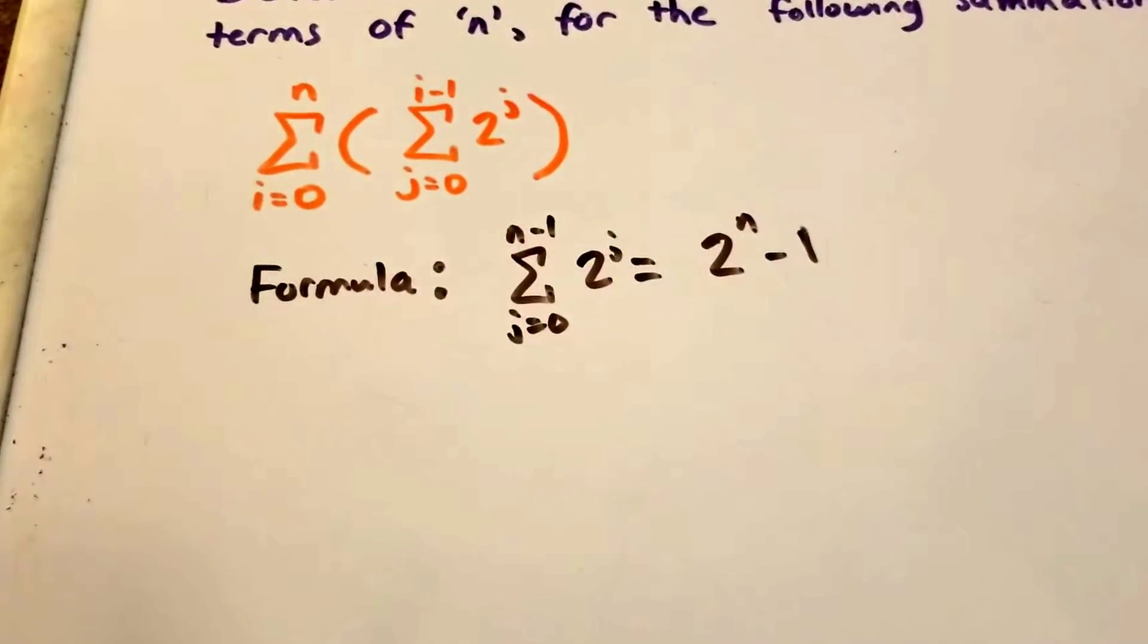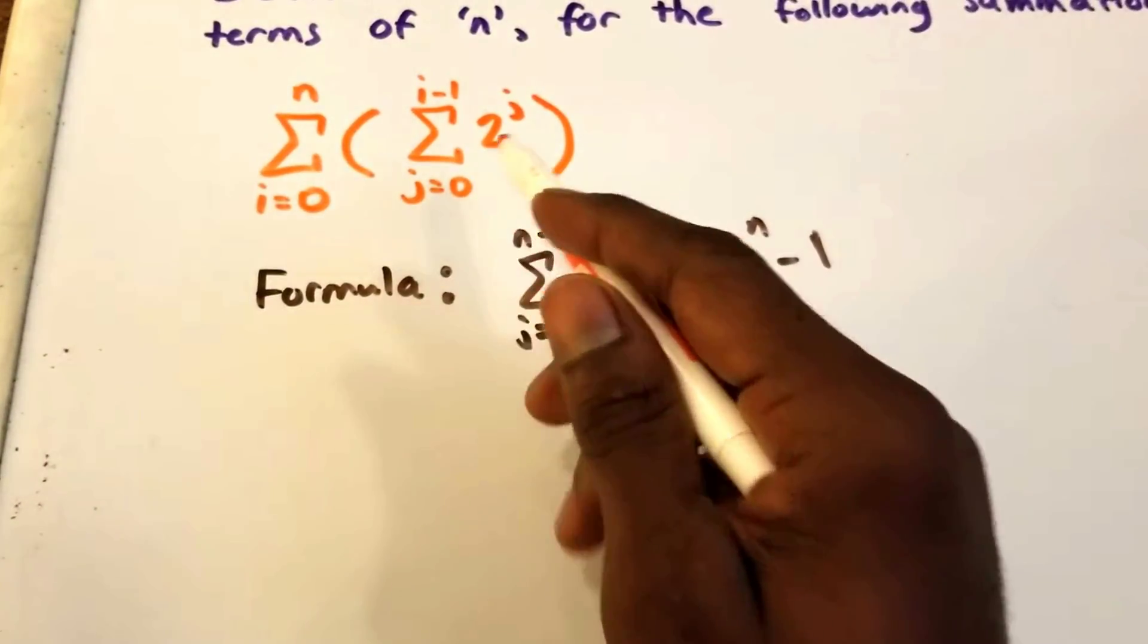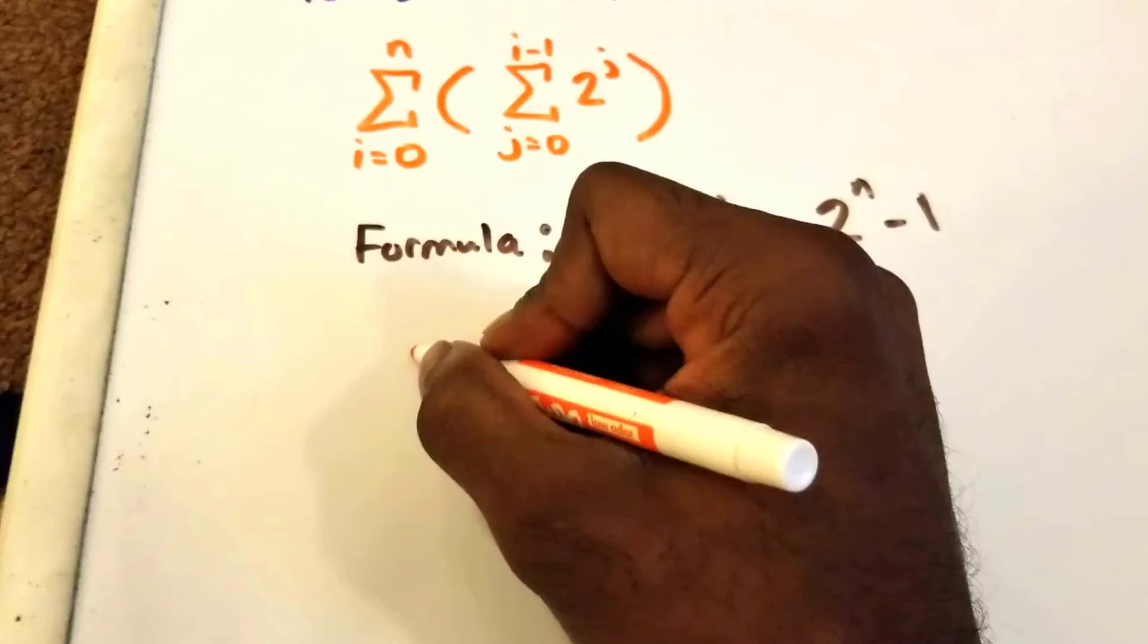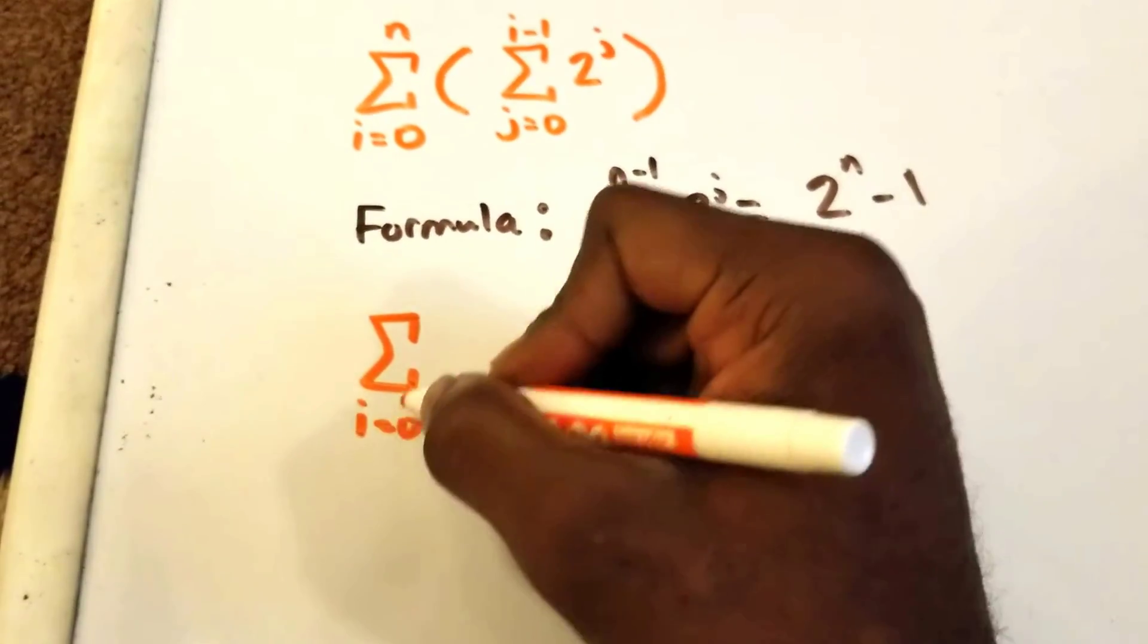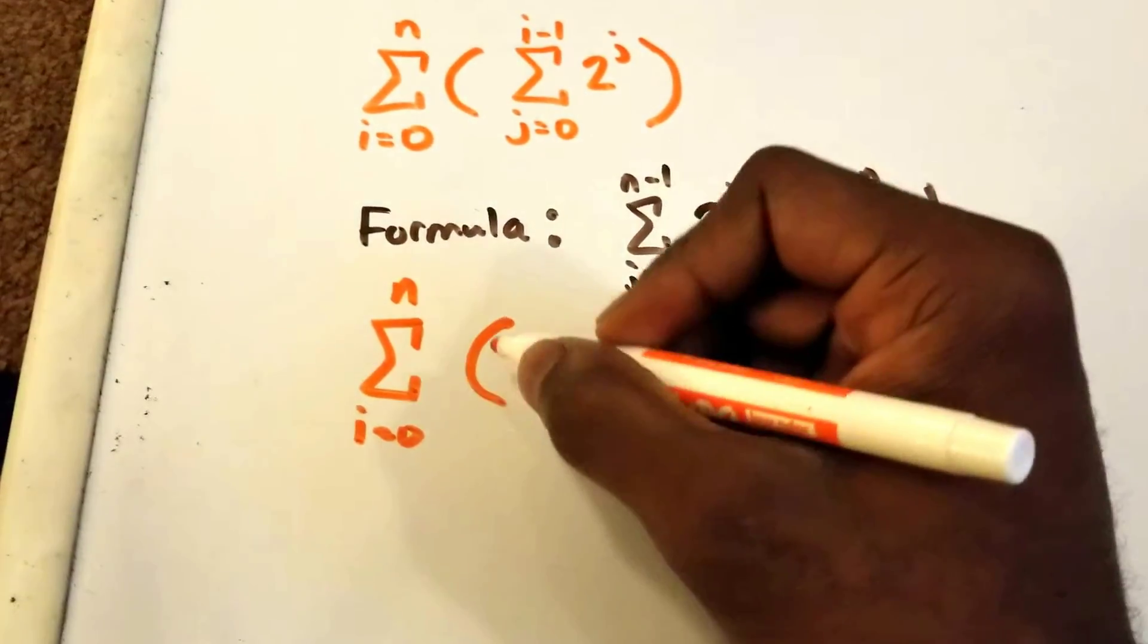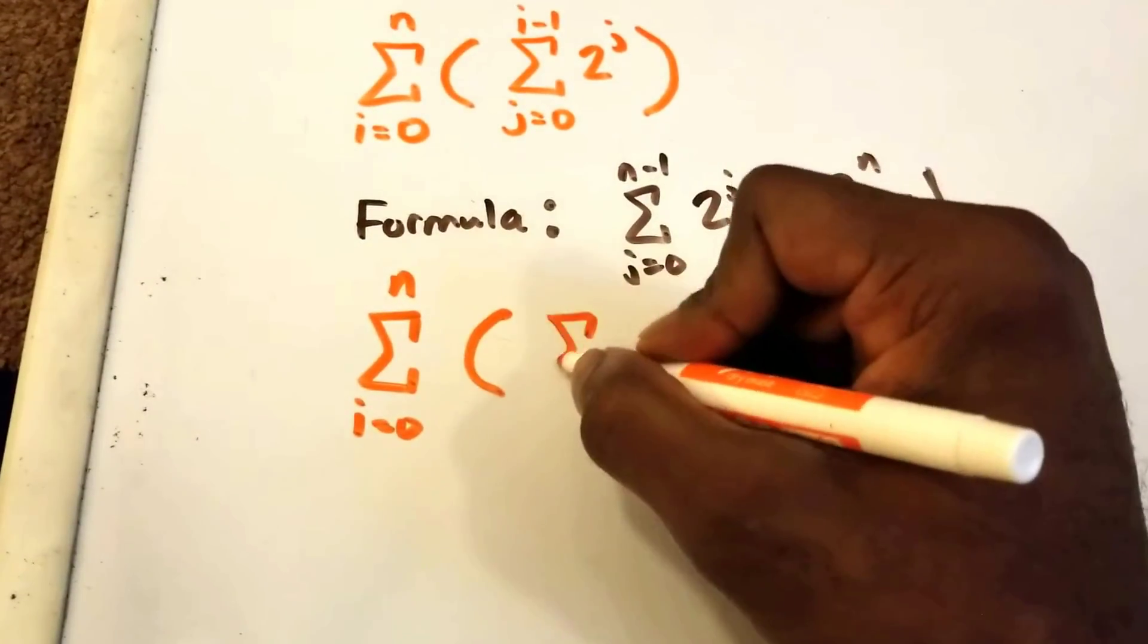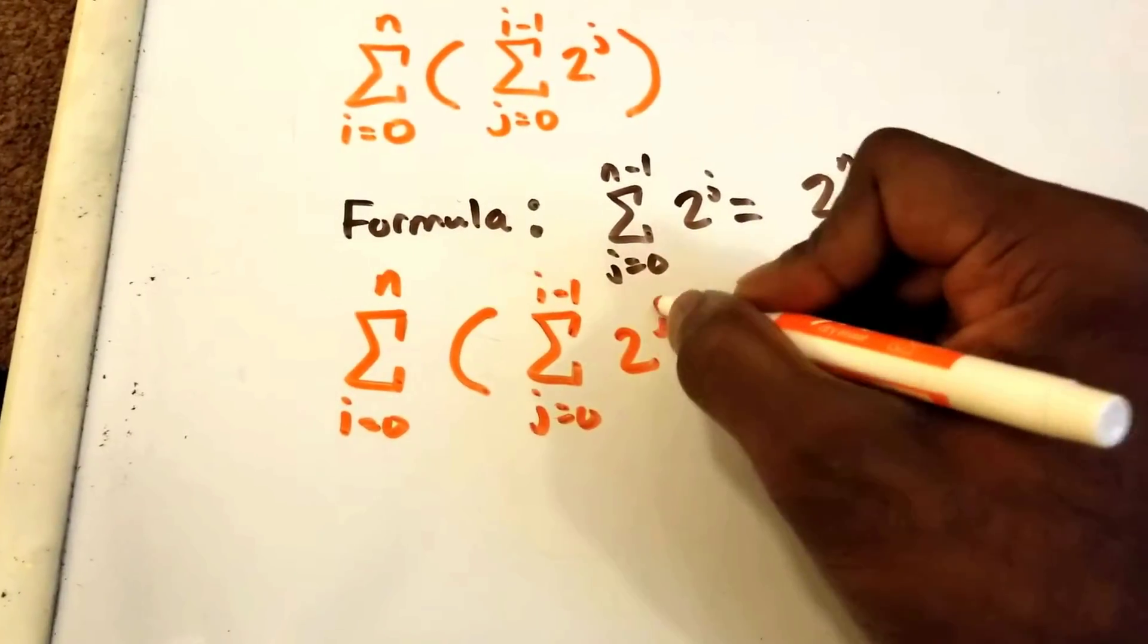What we can do now is write our summation, substituting our second summation with the formula. Actually, I'm just going to rewrite our original equation first. We have the summation from i equals 0 to n of the summation from j equals 0 to i minus 1 of 2 to the power of j.